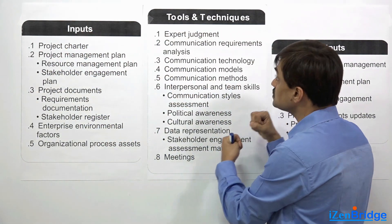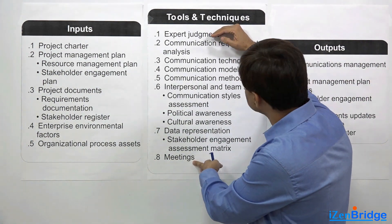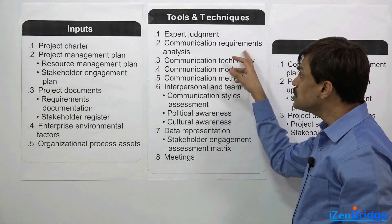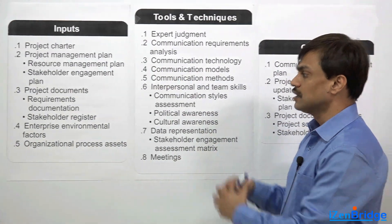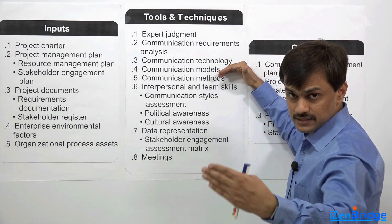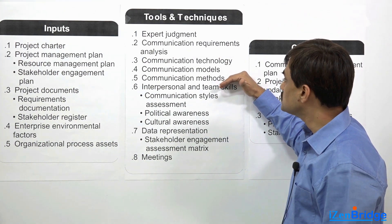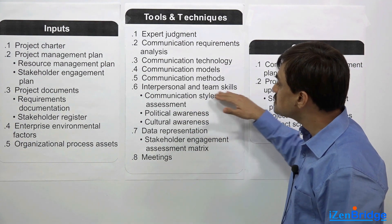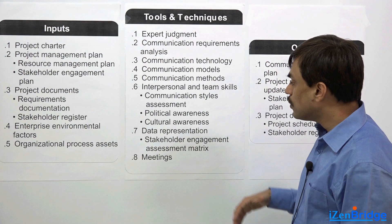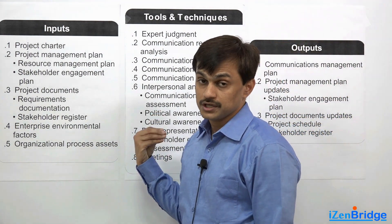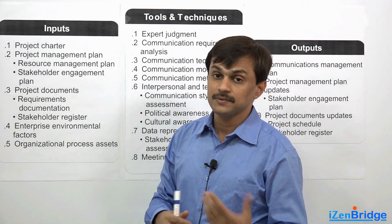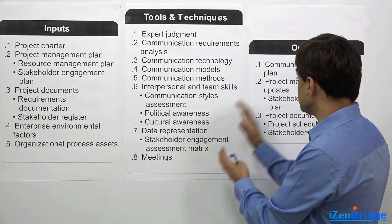You pick up all these inputs and apply tools and techniques. Expert judgment and meetings remain everywhere because somebody has to put their expertise into it. You perform a communication requirements analysis to understand what stakeholders and project teams need. You look at various technology options, communication models — sender, receiver, feedback — and communication methods such as push and pull. You also look at interpersonal and team skills: how are you assessing communication style, and how politically and culturally aware are you when planning communication? There could be a culture where information must be in a particular format, else people feel offended.